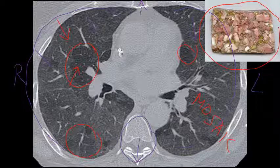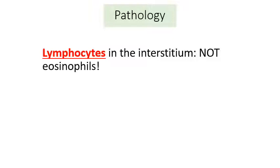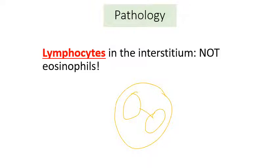If you have the typical history — a pet bird, or the patient is a never smoker — you can put it all together and probably come up with the diagnosis of hypersensitivity pneumonitis, maybe even without a confirmatory lung biopsy. Now we'll talk about the pathology — the pathologic findings in hypersensitivity pneumonitis. The one key takeaway is that the main pathology involves lymphocytes within the interstitium, not eosinophils.